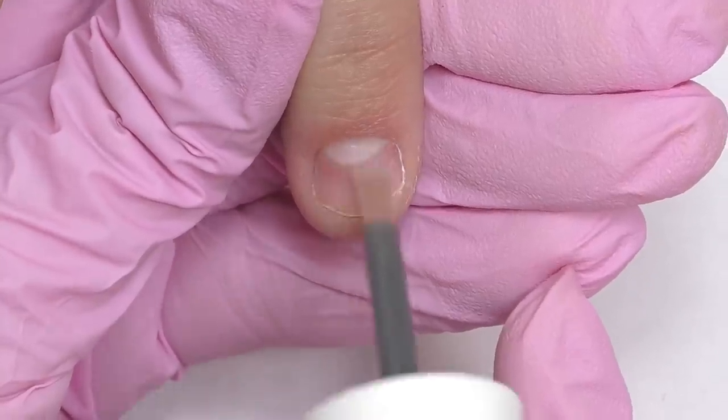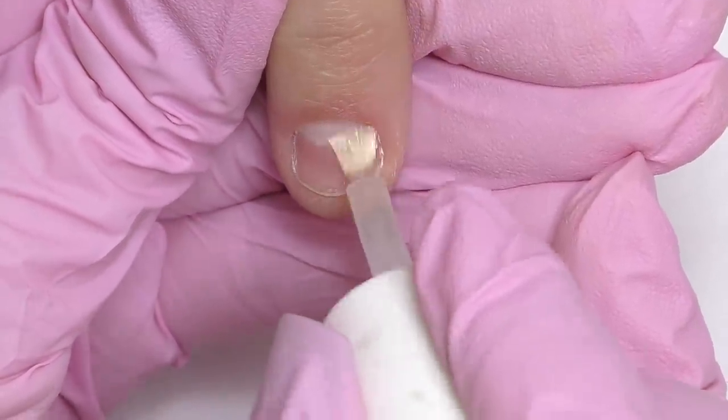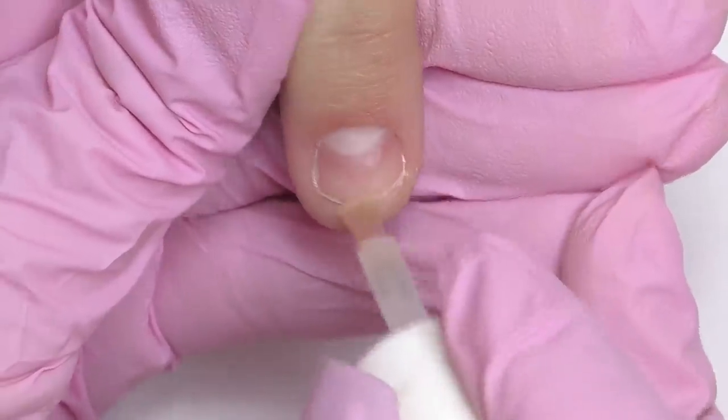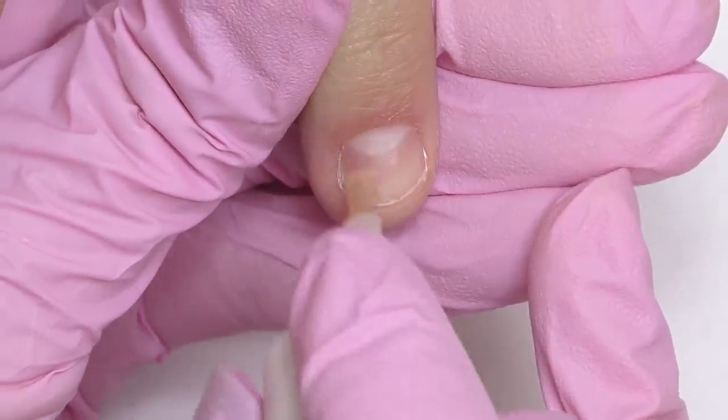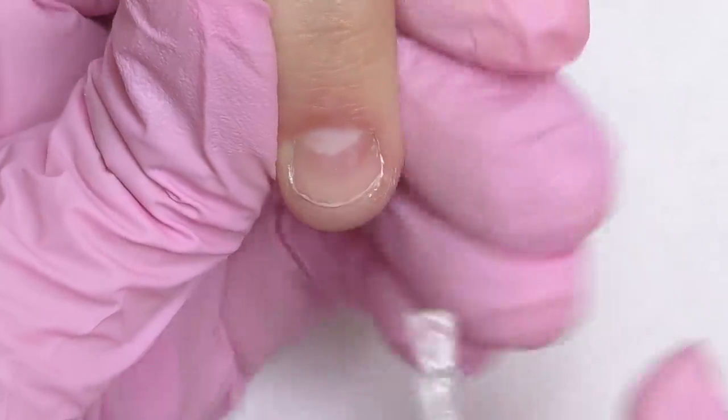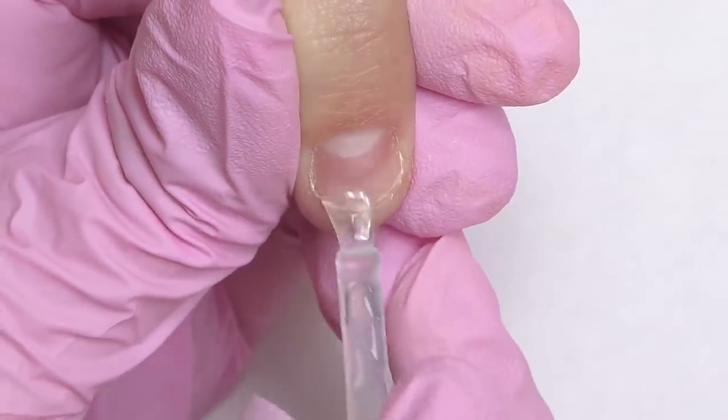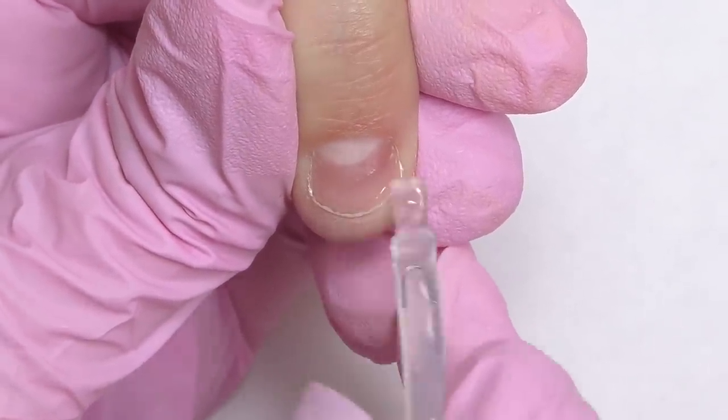Next nail and I'm going to fix my mistake this time. I apply dehydrator and non acid primer on the entire nail. Then I apply the base coat only on the free edge, exactly on the place where we are going to apply the strands. Now the mistake was I placed them too high.